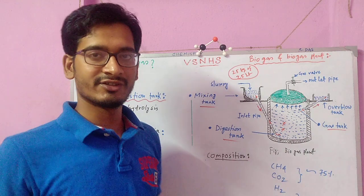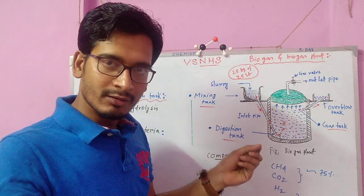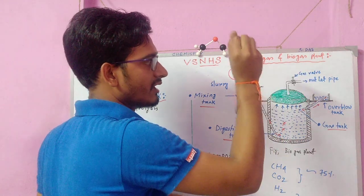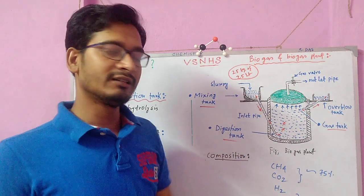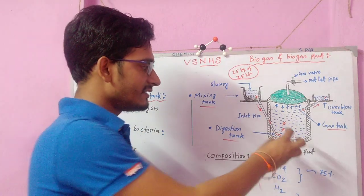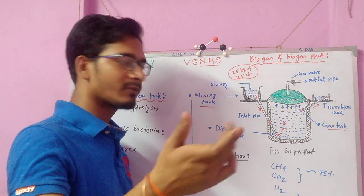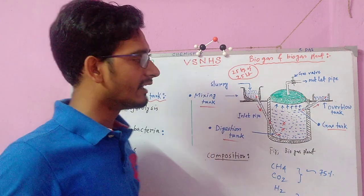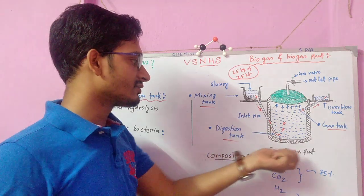In the digestion tank, the main chemistry takes place — bacterial anaerobic decomposition by bacteria occurs. Gas is generated and collected in the gas tank, which is connected to the outlet pipe, and we can use the generated gas according to our need. This biogas plant also has another component: the overflow tank. When the slurry material fills up, it starts overflowing, indicating that the tank is full.